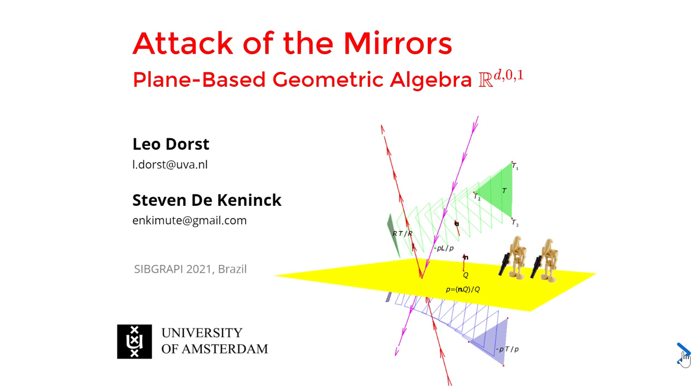Welcome back to the second part of the series of talks about PGA. I will now show you some algebra after Stephen has given you an impression of the geometry in the first talk. This one is called the attack of the mirrors because mirrors will turn out to be central to the way we look at things.